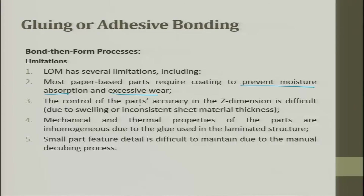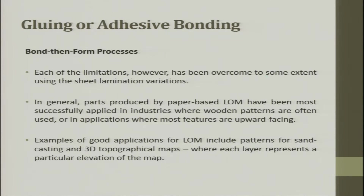LOM has several limitations: most paper-based parts require coating to prevent moisture absorption and excess wear. Delamination can start at a corner and propagate very fast — not because of pulling, but because OH groups freely available in the atmosphere enter inside and weaken the bond. Control of part accuracy in the Z direction is difficult. Mechanical and thermal properties are inhomogeneous due to the glue used in laminate structure. Small part feature detail is difficult to maintain due to the manual decubing process, and small parts can break during decubing.